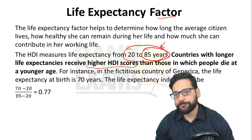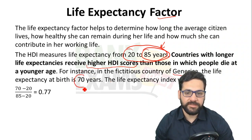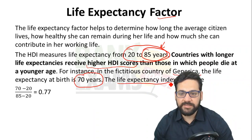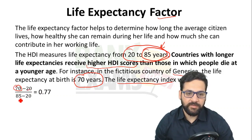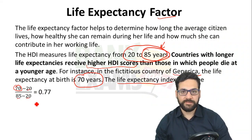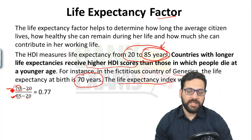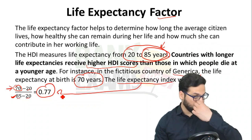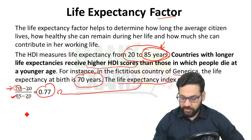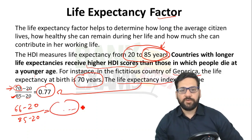For example, suppose there is a country 'Generica' where the life expectancy at birth is 70 years. The life expectancy index would be calculated as: (70 − 20) ÷ (85 − 20) = 0.77. That is the life expectancy index. Similarly, if any country has a life expectancy of 66, it would be (66 − 20) ÷ (85 − 20).